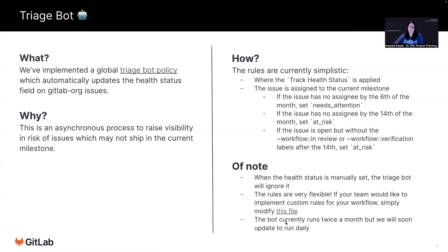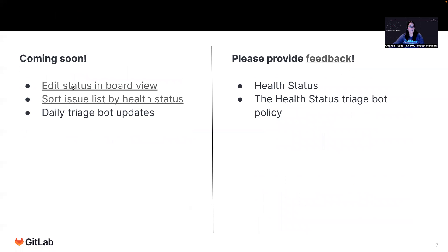Currently, I want to note that the bot runs twice a month, but we are soon going to update this job to run daily. I just wanted to tease a little bit here — we have a couple of things in our current milestone and next milestone: being able to edit the health status in the board view on the right pane, being able to sort the issue list by health status ascending or descending, and updating the triage bot to run daily. I'd like to ask you for feedback if you'd like to participate in dogfooding this feature, and you can give us feedback on both the health status as well as the health status triage bot policy. I would love to learn more about how you're using it and how you envision we could use it in the future so that we could make this feature more valuable to our customers.